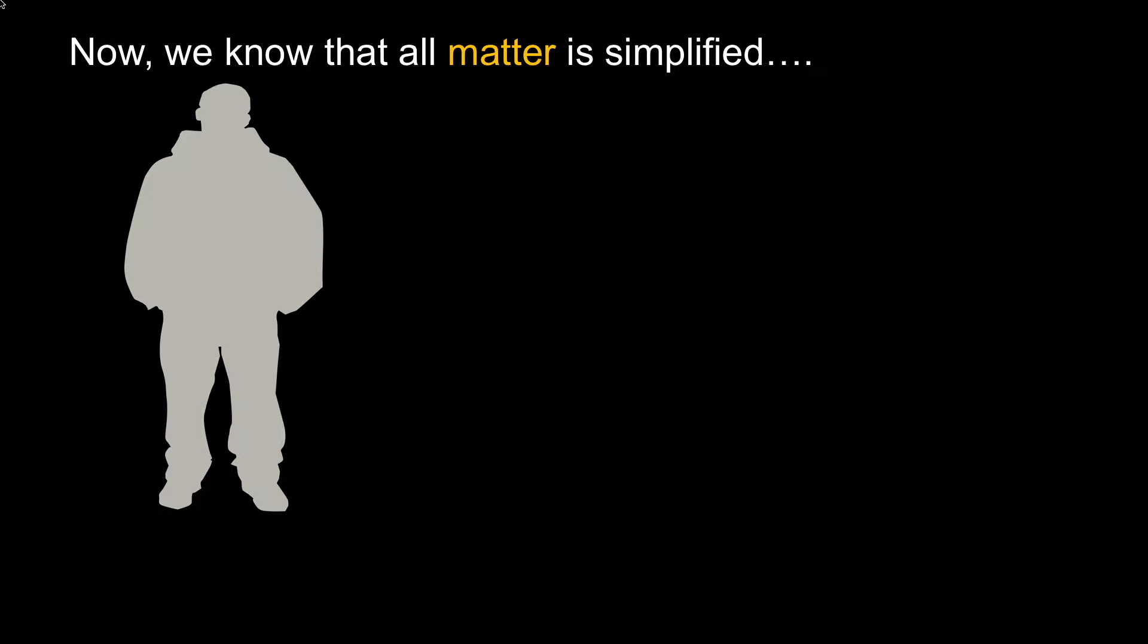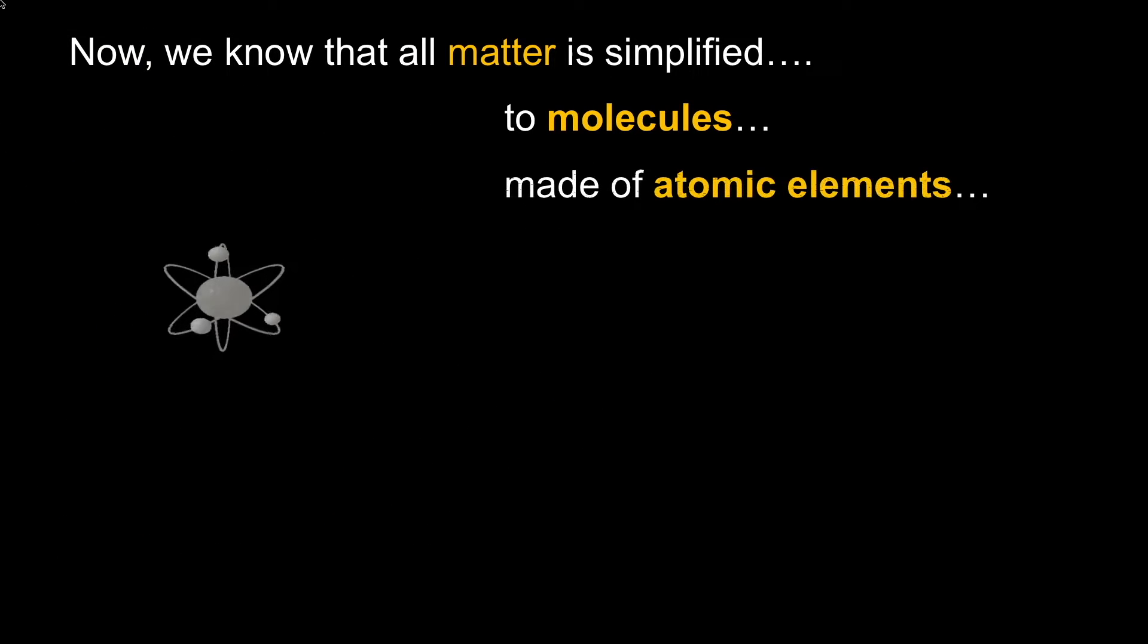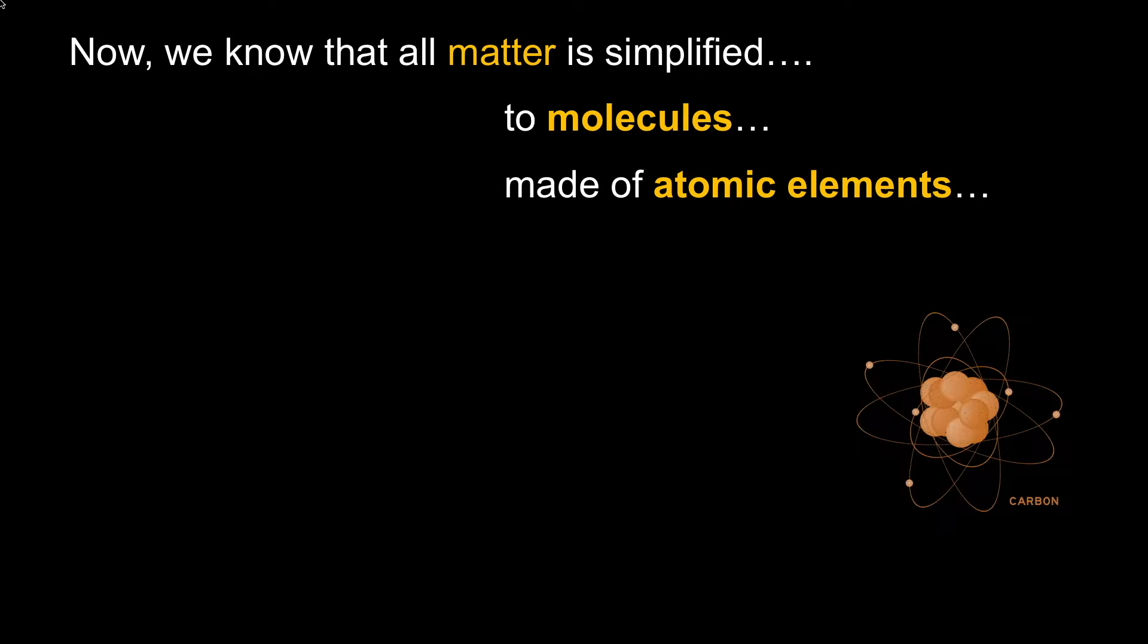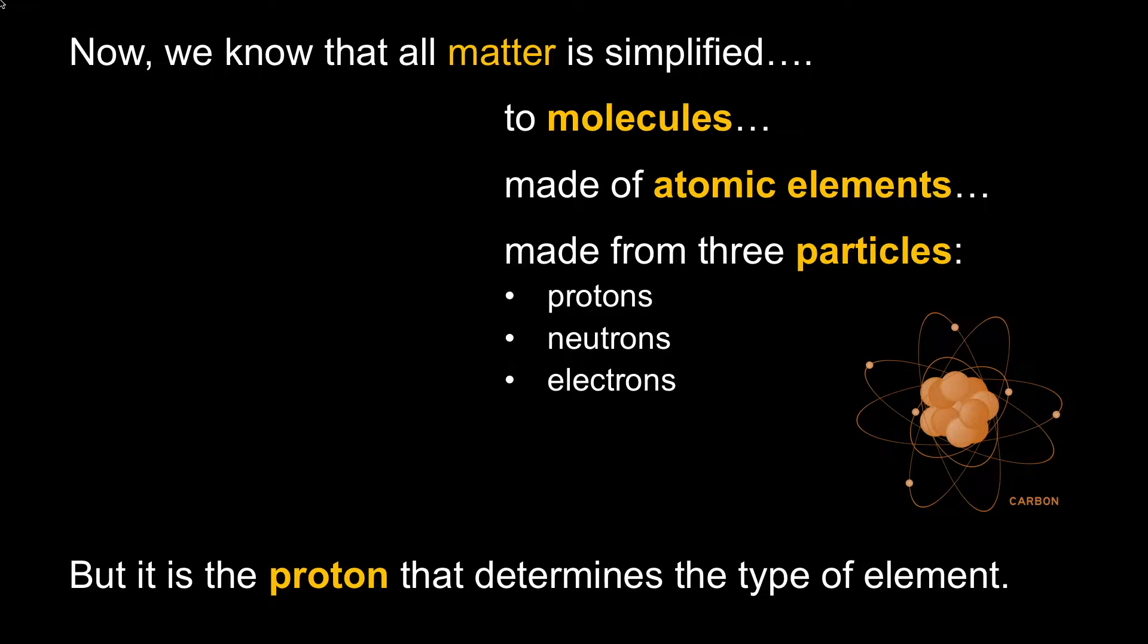Now we know that all matter is simplified to molecules, and those molecules are made of atoms. Atoms are made of three particles: protons, neutrons, and electrons. The key thing to remember is that it's the proton that determines the type of element.